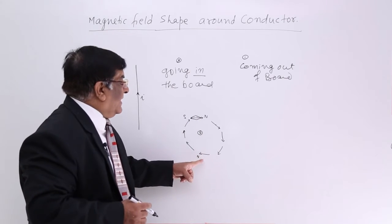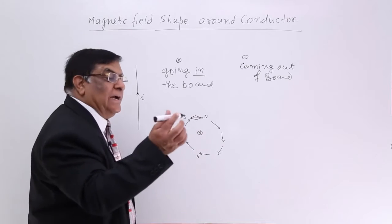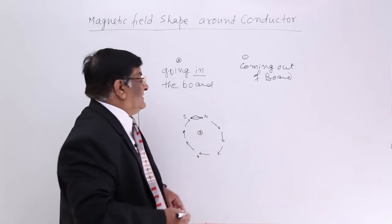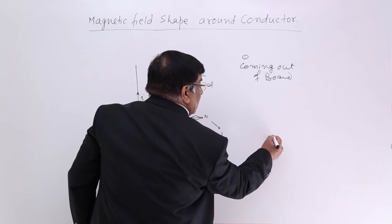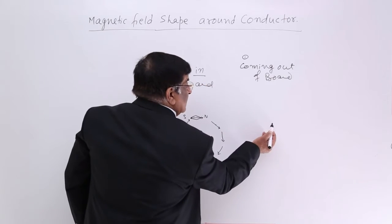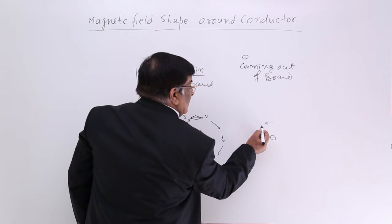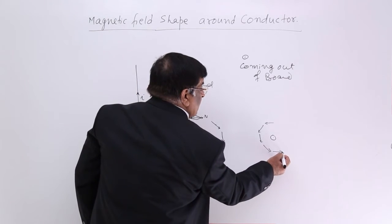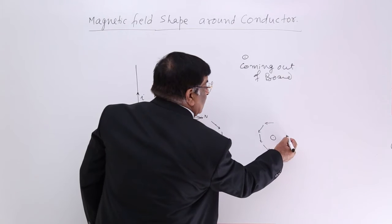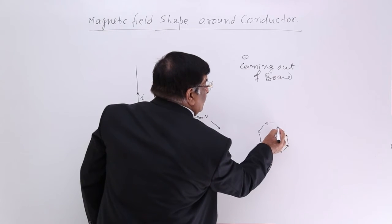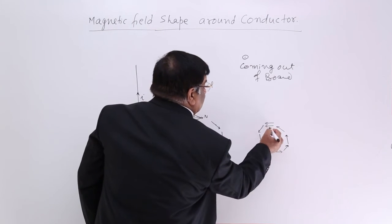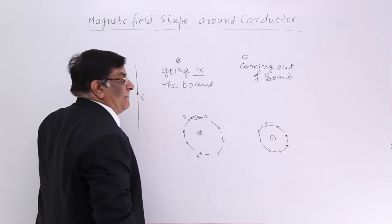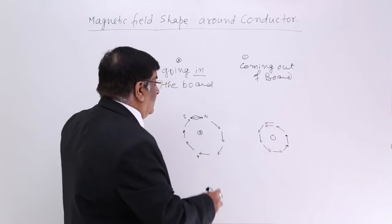So this is the direction of magnetic field when the current is going inside. If the current is coming out, we find the magnetic needle stays in the opposite direction to the earlier one. So if you make it clockwise or anticlockwise — this was clockwise, this is anticlockwise. This is the direction of magnetic field.